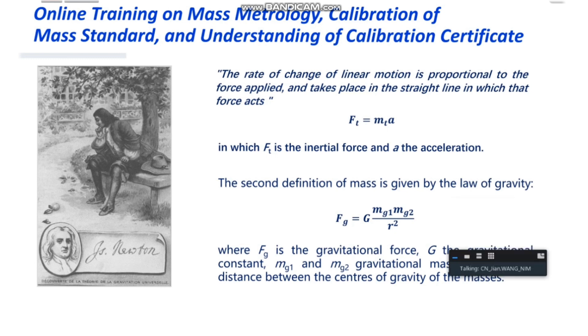F_t equals m_t a, where a is acceleration and F_t is the inertial force. The second definition of mass is given by the law of gravity. You can see this formula.